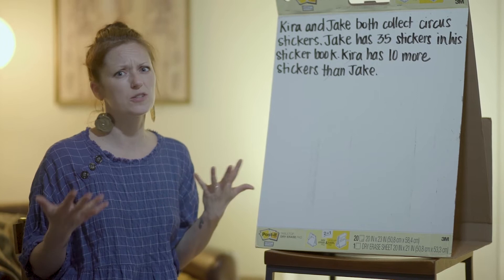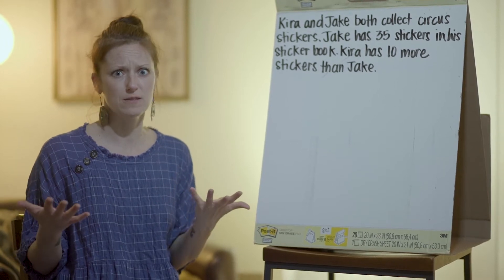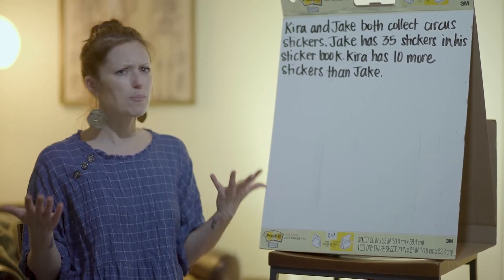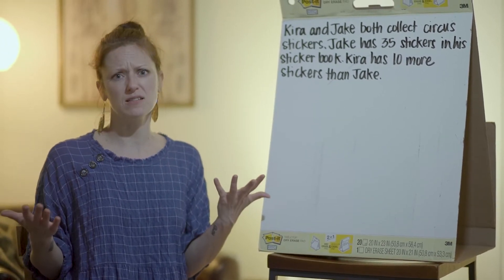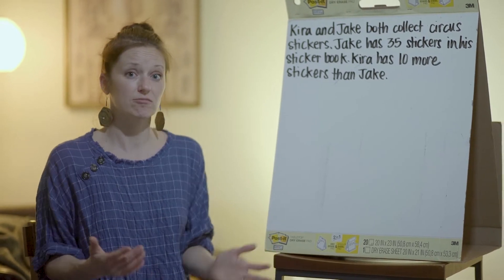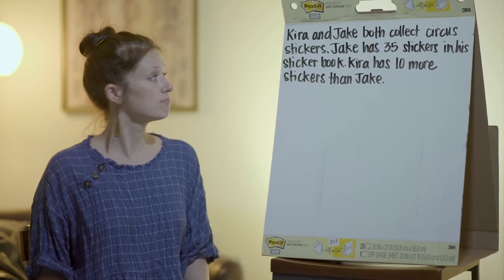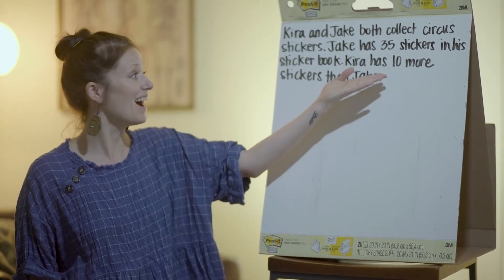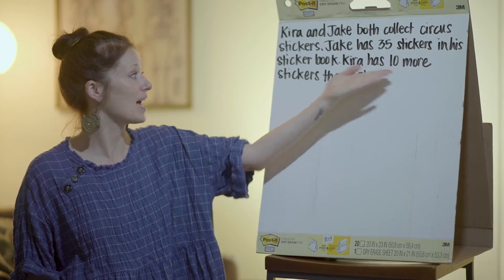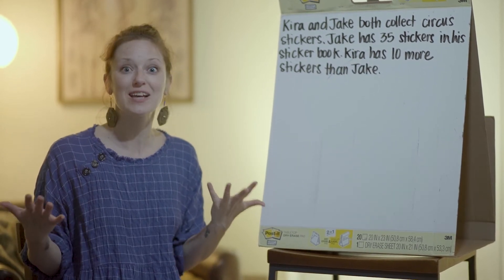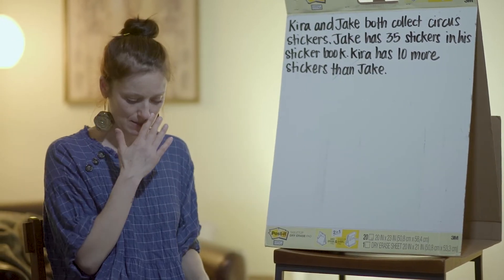So that means she must have more stickers than him. What part of the problem tells us that she has more stickers than Jake? That's right — Kira has 10 more stickers than Jake, so that means she has more than he does.